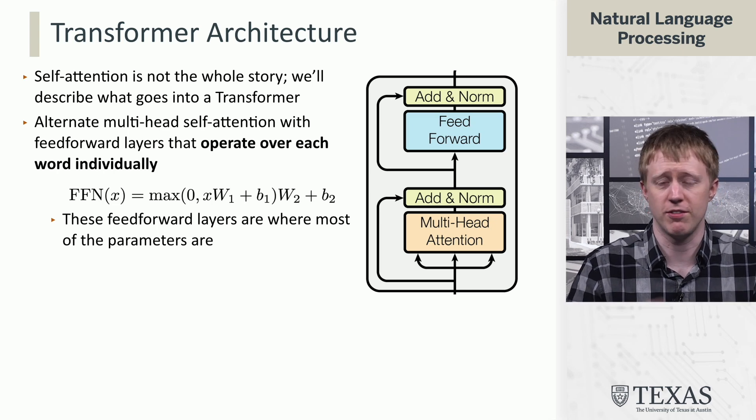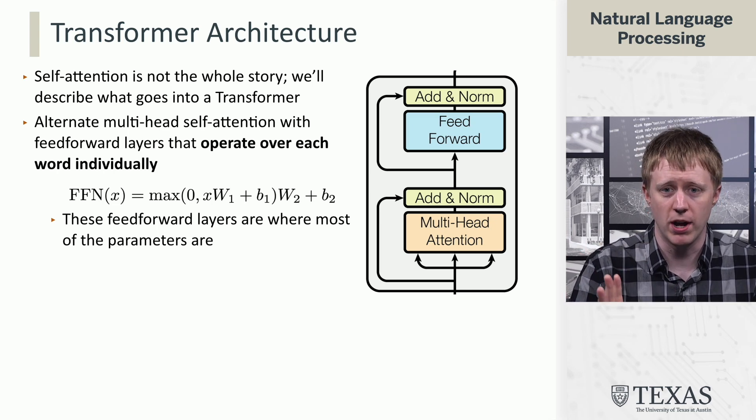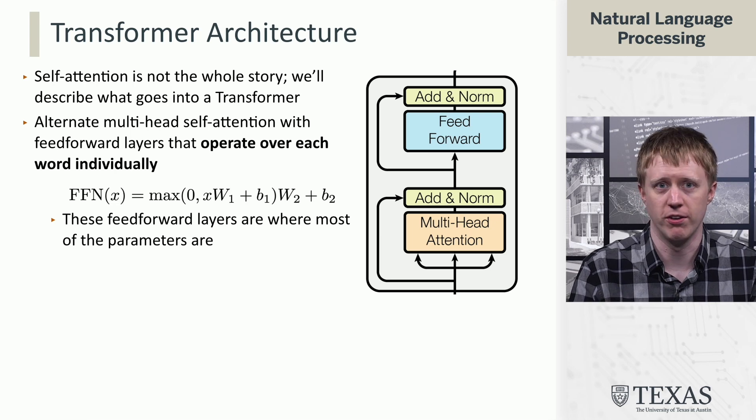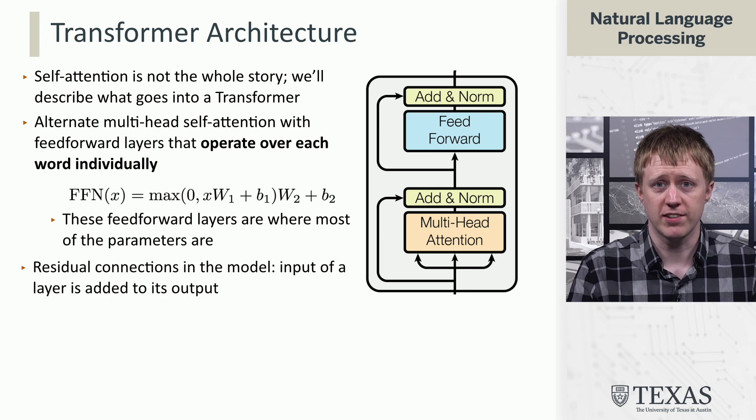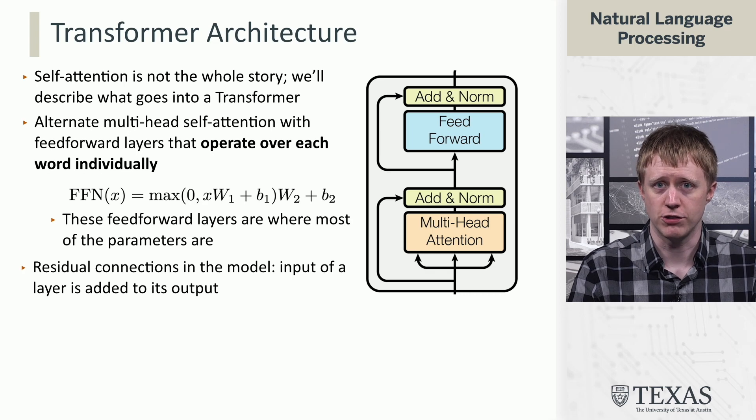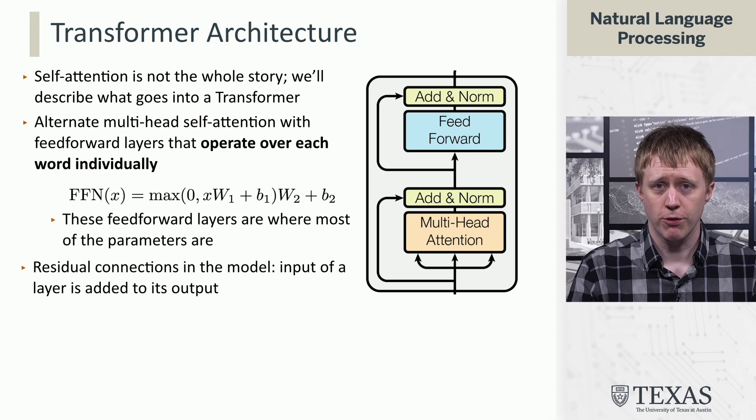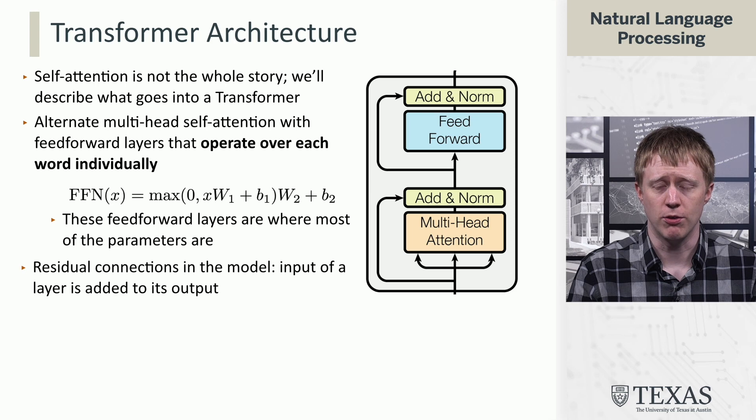And this feed-forward network is just a very simple, standard, like one hidden layer feed-forward neural network, nothing fancy going on there. Now, there's two other things in this diagram, which is from the attention is all you need paper. The first is all these arrows. So, what are these arrows doing?